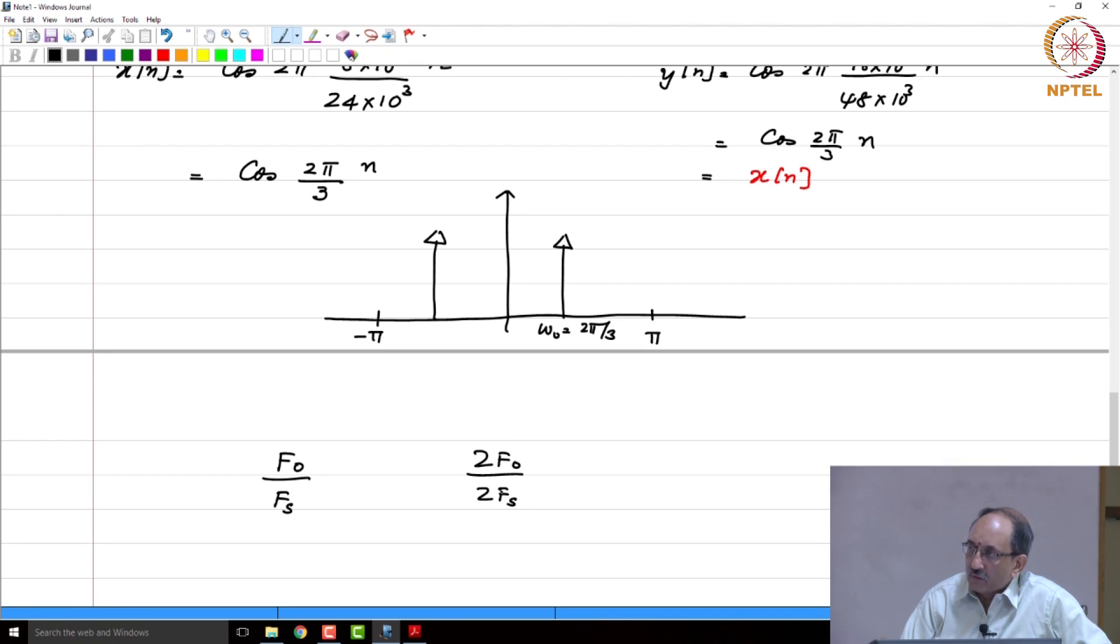Therefore, to go from this DTFT spectrum to the underlying true analog frequency in hertz, you need f_s information.